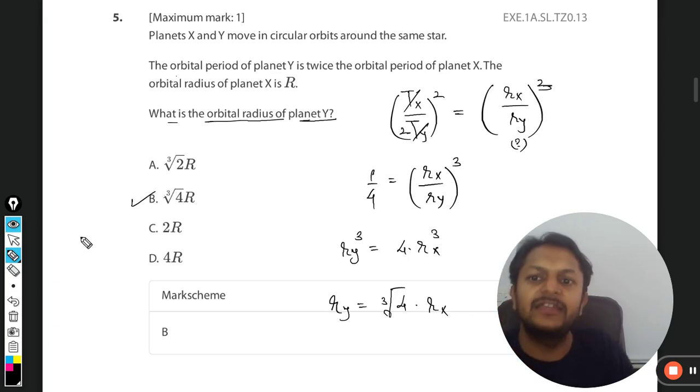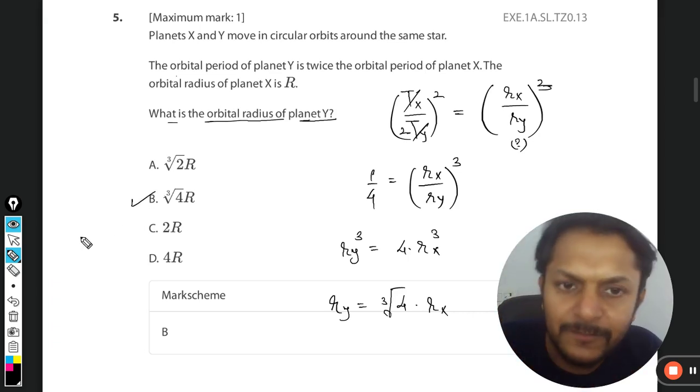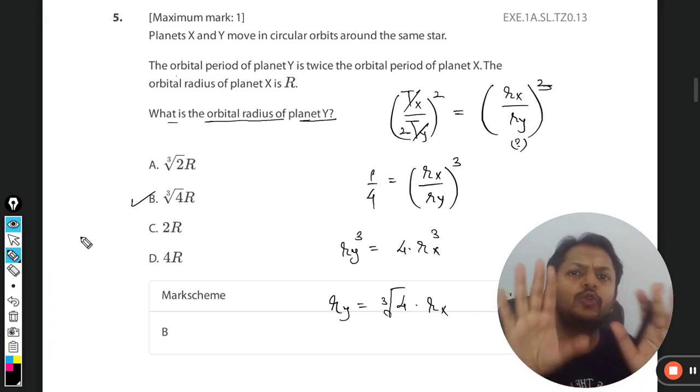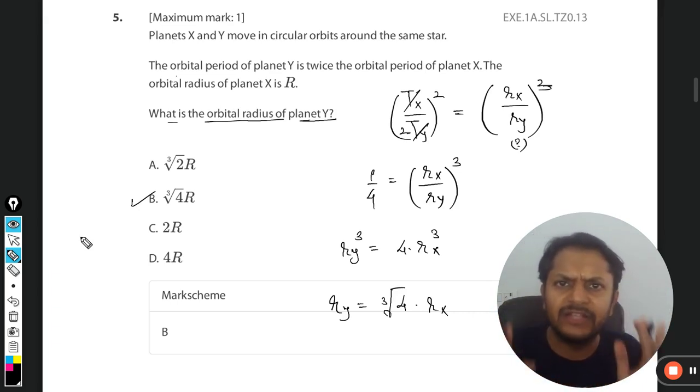This is how we do it. In the first part of the video we learned that there are two different methods in which you can imagine how to solve these questions. Both of the methods are telling you the same final expression. You just plug in the value, get the answer, and the answer is B.